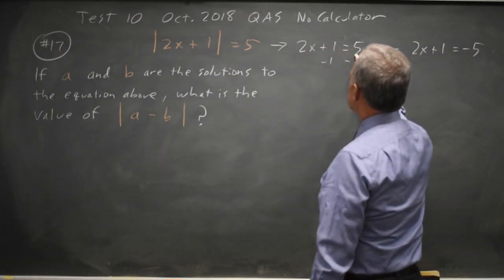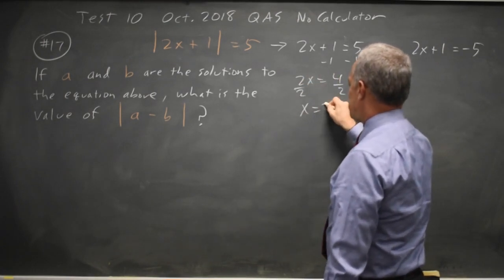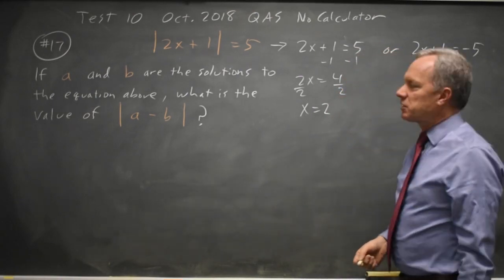Subtracting 1 from both sides gives us 2x equals 4, divide both sides by 2 and x equals 2. Always do the same thing to both sides of any equation.